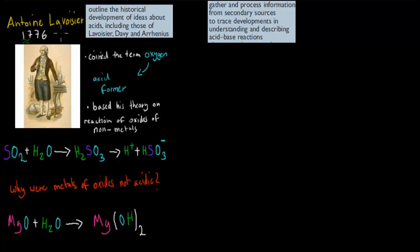Lavoisier coined the term oxygen, and according to him oxygen was something that was an acid former. This might seem unfamiliar because we don't currently think of oxygen as making acids. He based his theory on the reaction of oxides with non-metals — non-metals actually make acidic oxides. So he noticed that whenever he had a non-metal oxide, like sulfur dioxide, and put it into water, the resulting solution would be acidic.